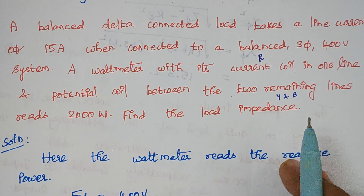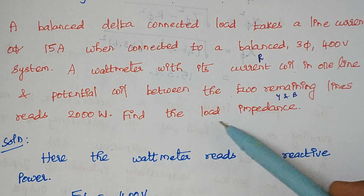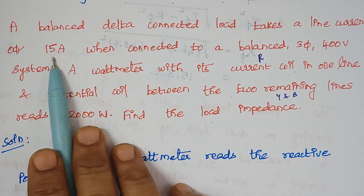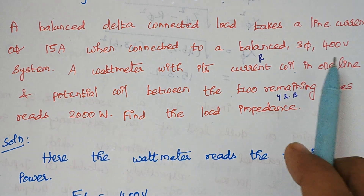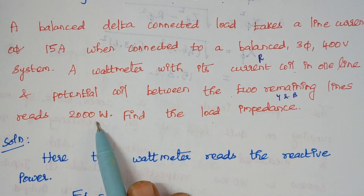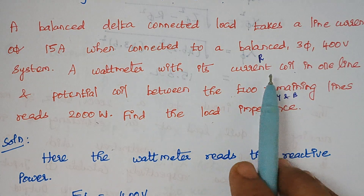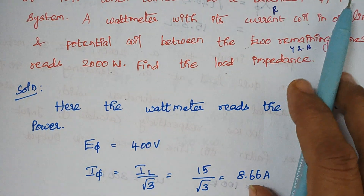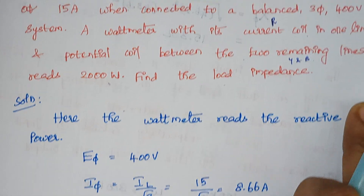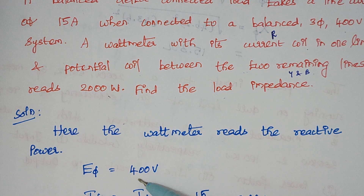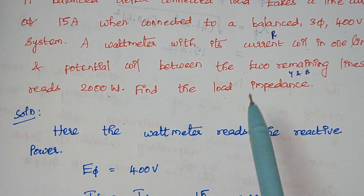We have to find the load impedance. This is a delta connected load, and the value of line current is given, the value of voltage is given, and the wattmeter reading is given. Since the connection is like this, the wattmeter reads the reactive power. The voltage is 400 volts. In a delta connection, line voltage equals phase voltage, therefore E_phase = 400 V.